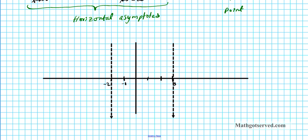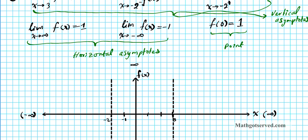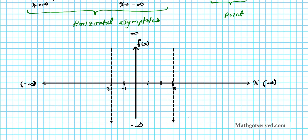Let's label our axes so we don't get confused — this is f of x and this is x. Up here is infinity; negative infinity is below for the vertical asymptotes. And for the x-axis, positive infinity is to the right and negative infinity to the left. For x equals 3, we are approaching from both sides — this side is 3 from the right and this is 3 from the left.